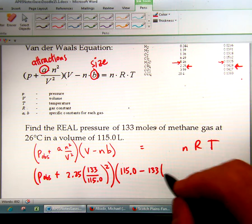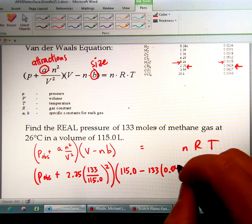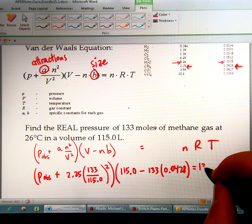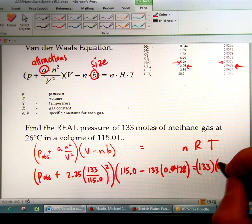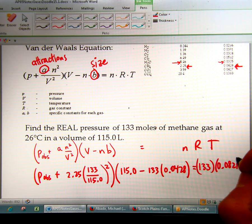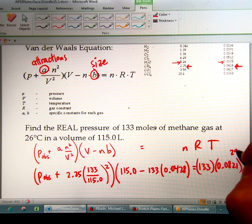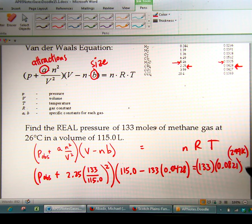So 0.0428, and that's going to equal N, which is 133, times R, which is 0.0821, times the temperature in Kelvin, which is going to be 299.